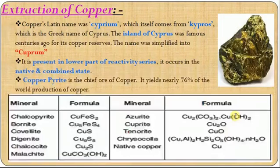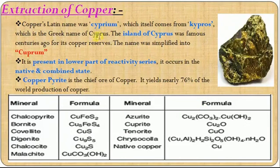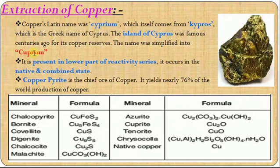Copper — we usually call it cuprum. The name actually comes from the Latin name Cyprium, which itself comes from the Greek name of Cyprus. In ancient times, the copper metal was largely found on the island of Cyprus. That's why it is mainly called Cyprium, which then simplified into cuprum. This is how the name has come.